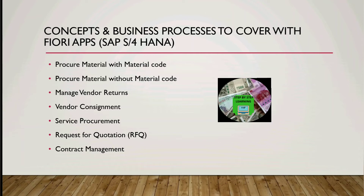The second step is to approve the purchase requisition, performed by the Purchasing Manager. The third step is creation of a purchase order with reference to the PR, again performed by the Purchaser. The fourth step is post goods receipt with reference to the PO, generally done by the Inventory Manager. The fifth step is creation of the supplier logistic invoice verification with reference to the PO, which can be done by Accounts Payable.